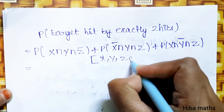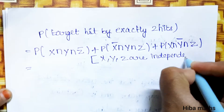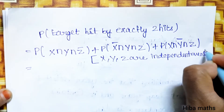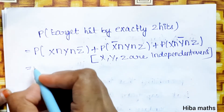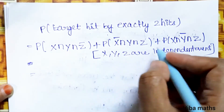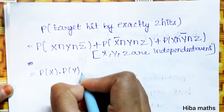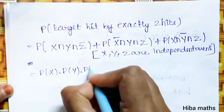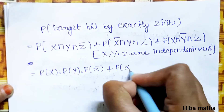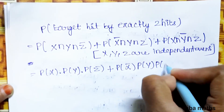We know that X, Y, and Z are independent events. Since they are independent, we can write each intersection as a product. So P(X ∩ Y ∩ Z̄) = P(X) · P(Y) · P(Z̄), and similarly for the other terms.